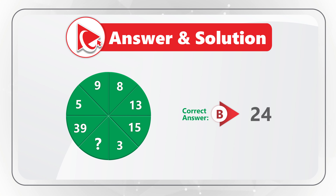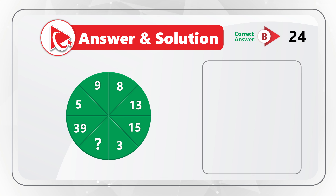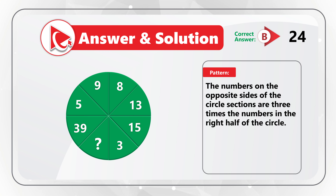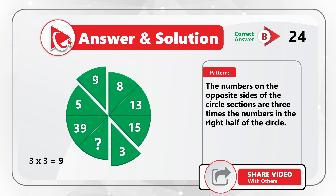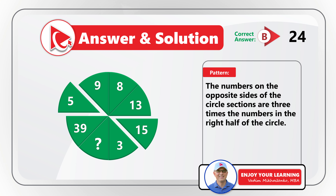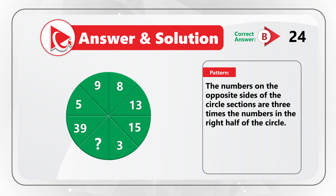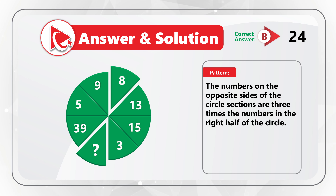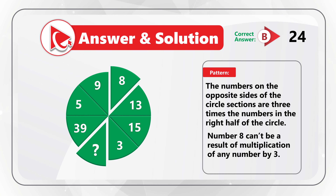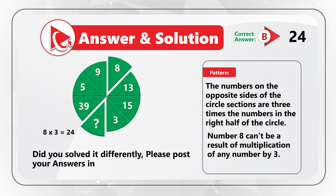The correct answer is choice B, 24. The numbers on opposite sides of the circle sections are three times larger than the numbers on the other side. For example, the 5 o'clock and 10 o'clock sections have 3 and 9 — nine is three times three. The next pair is 5 and 15, and 5 multiplied by 3 equals 15. The pair 13 and 39: 13 multiplied by 3 equals 39. Since 8 cannot be a result of multiplying any number by 3, the missing number is 8 multiplied by 3, which equals 24.